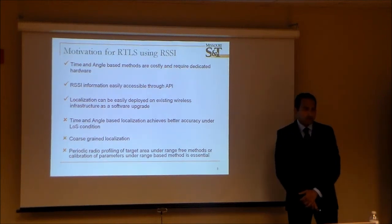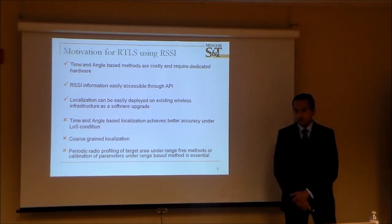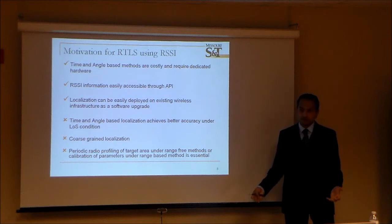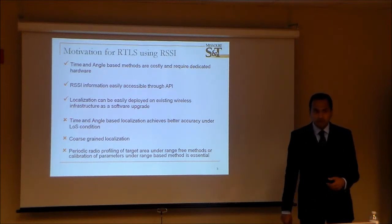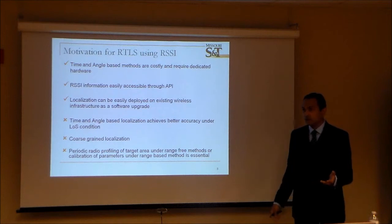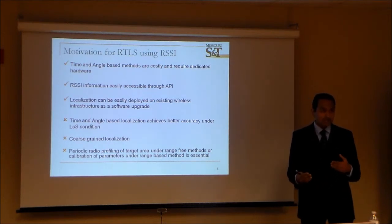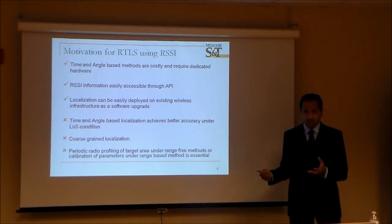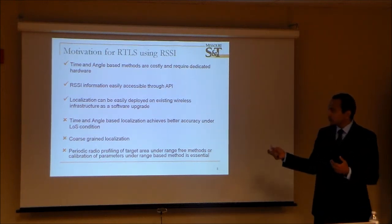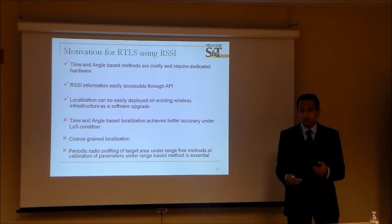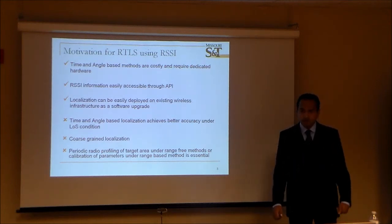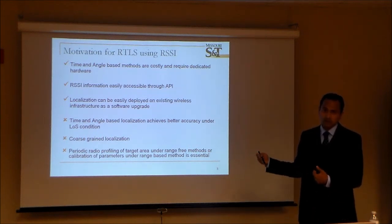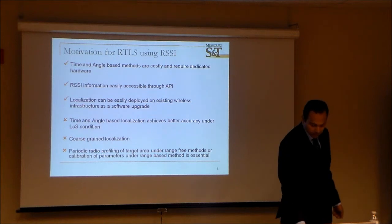The main motivation for signal strength based localization is that it's cheap — the signal strength information is available in pretty much any commercially available wireless device, so in most cases it's nothing more than a software update. The downside is that you only have a 1 dBm change between sample points, so you don't get really fine-grained localization — it's coarse-grained. However, time and angle based methods need good line of sight, and when you don't have it, signal strength is more tolerant to non-line-of-sight conditions.